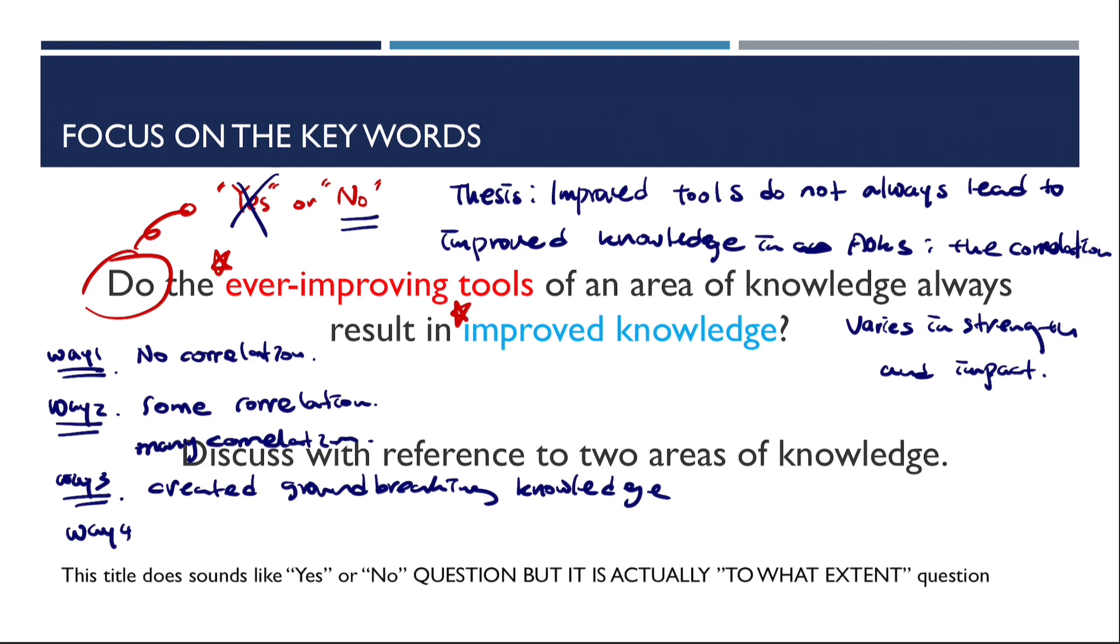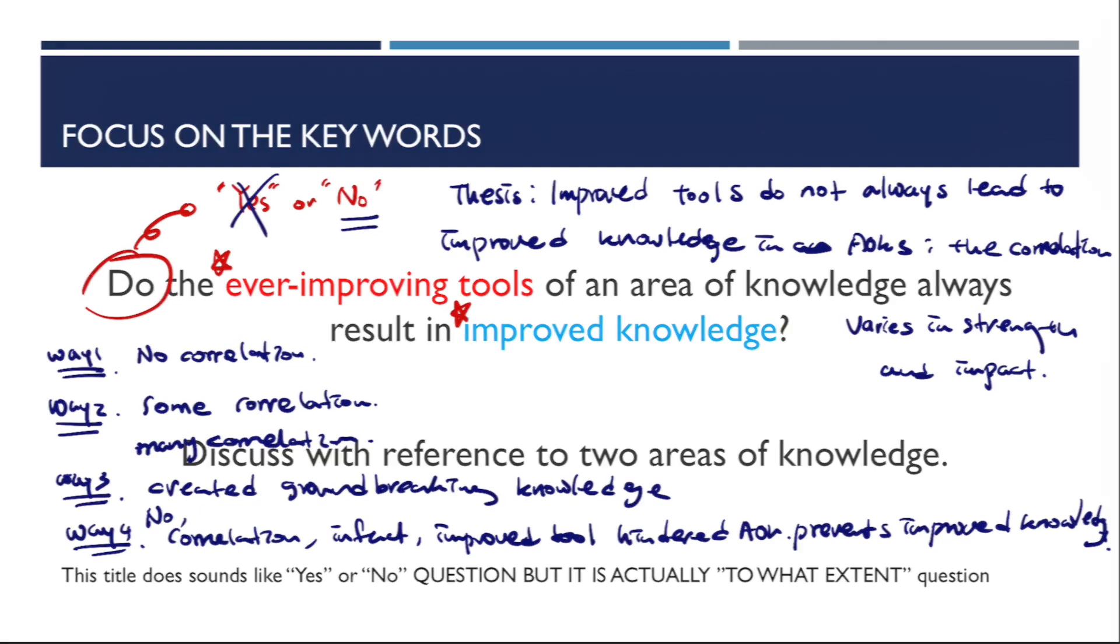And the last way of answering this question is there's no such thing as correlation. In fact, there's no such thing as help from the improved tools to improve knowledge. So you can always say that improved tools is basically similar to the way one, but way four is there's no correlation impact. In fact, the improved tools hinders and prevents improved knowledge. These are the four ways to answer this question. So you have to choose obviously one of them to answer this prompt.